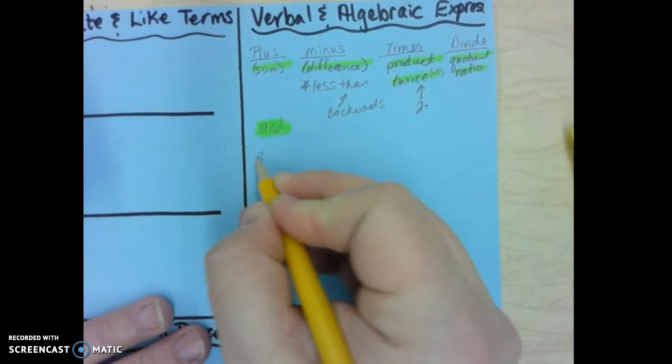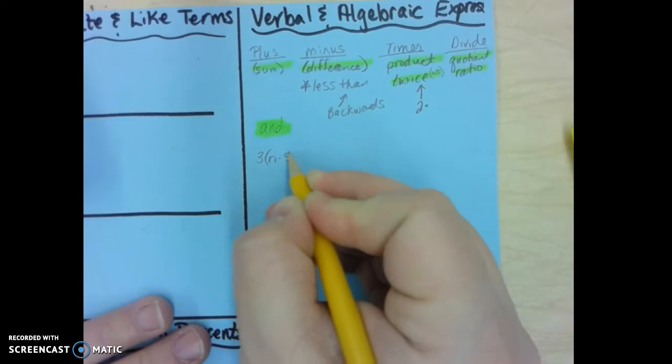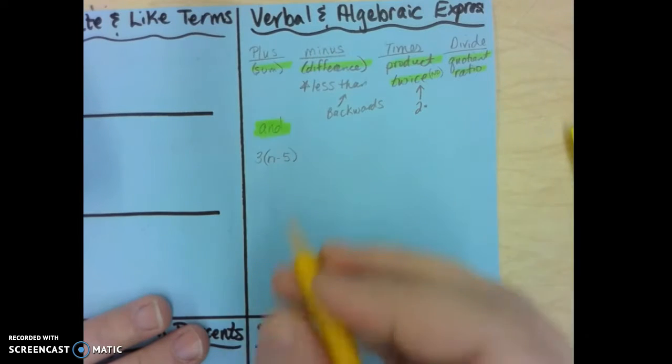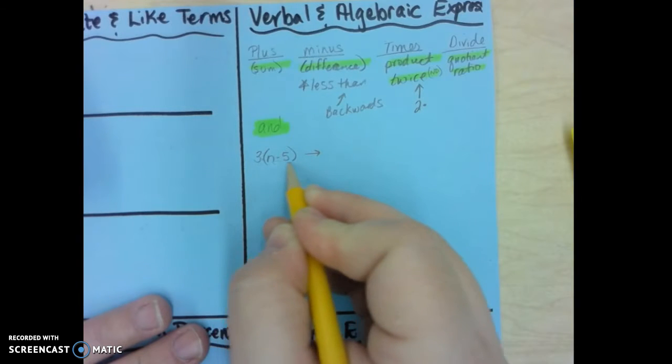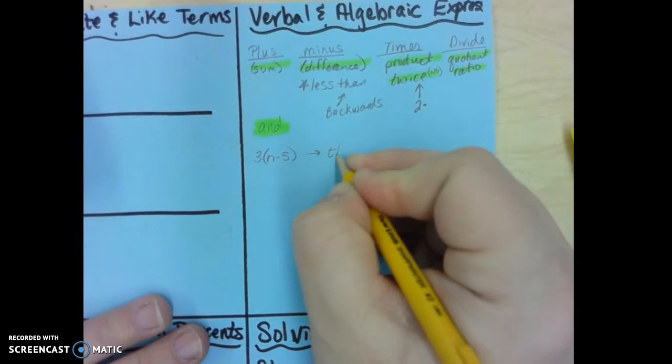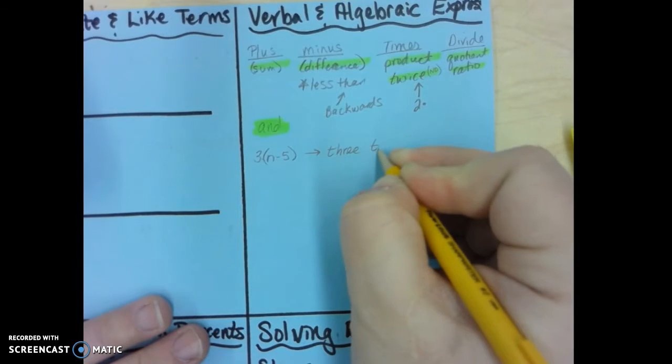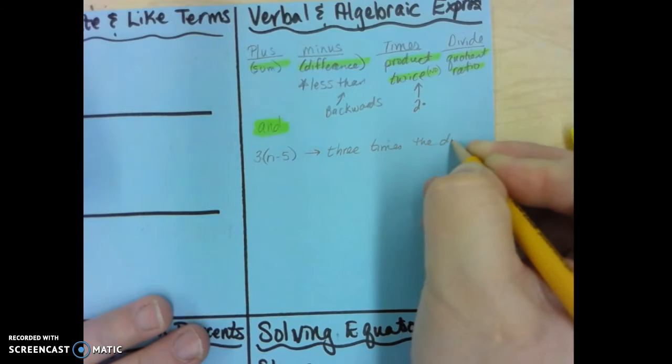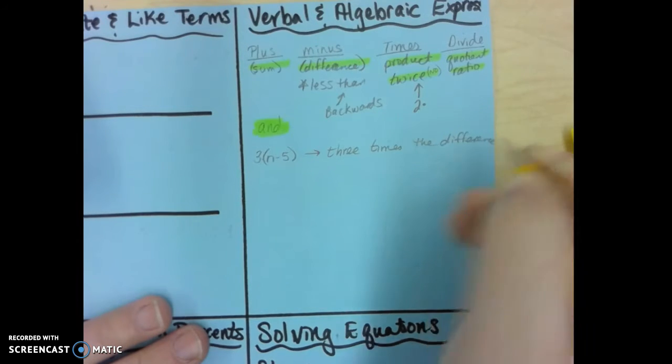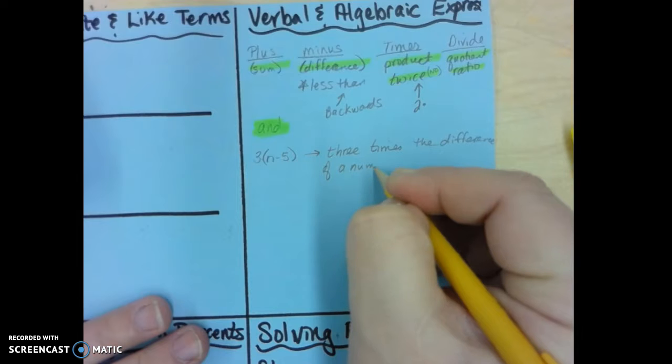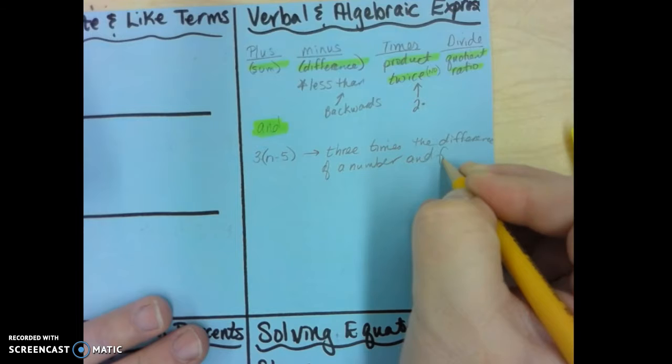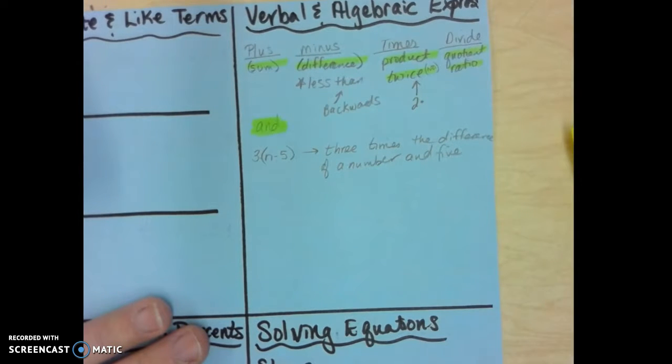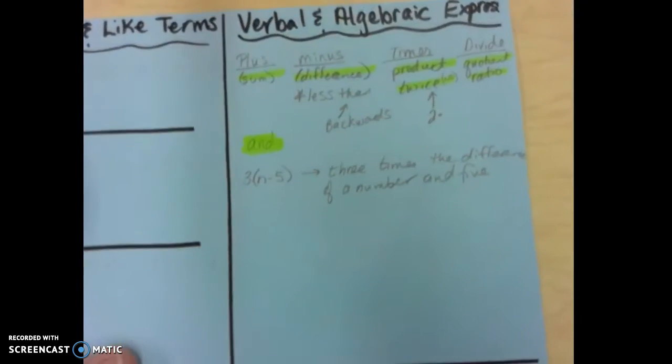So then there's some different types of problems you have. You're going to have problems where you have to write it in words. And so this one would be three times, and I'm timesing by this whole thing, which is difference. So three times the difference of a number, and that's where the and sign goes, and five. And again, that's about the only way I can write it, because I have to use the word difference, because there's parentheses.